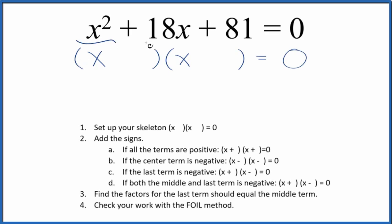Let's go back to the equation x² + 18x + 81 = 0. To start with, we'll set up a skeleton equation like this.